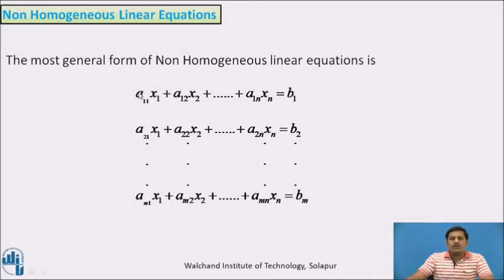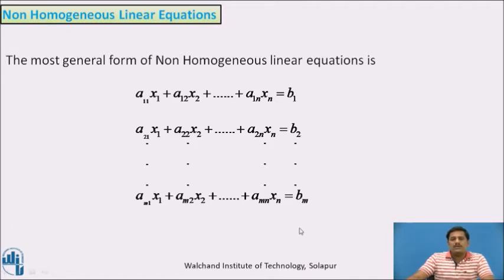Here, in all n unknowns are present: x1, x2, and so on up to xn, and in all m equations are present. All the coefficients a11, a12, and so on up to amn, and the constants b1, b2, and bm are all constants. In this topic, we are going to solve such a system.